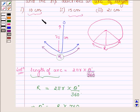This is the point O, and this is the length of the pendulum which is 75 cm.